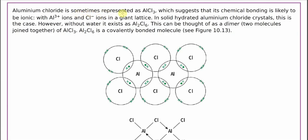Aluminum chloride is sometimes represented as AlCl3, which suggests its chemical bonding is likely to be ionic, with aluminum ions and chloride ions in a giant lattice.